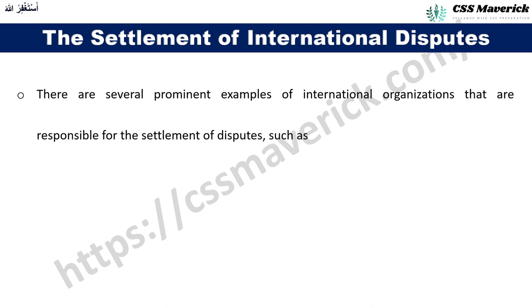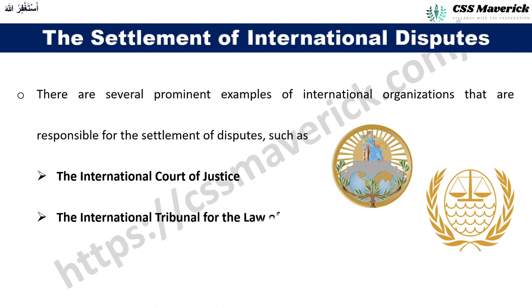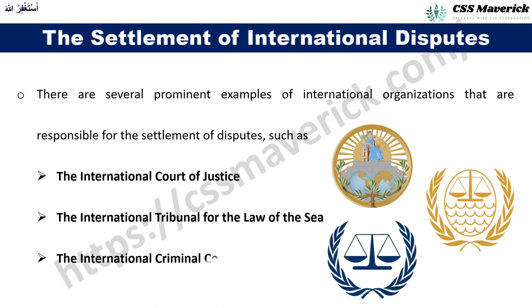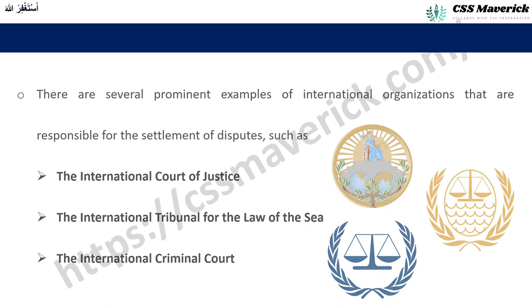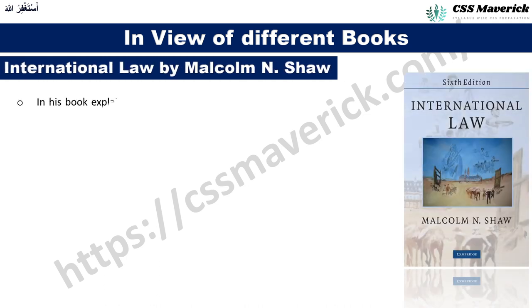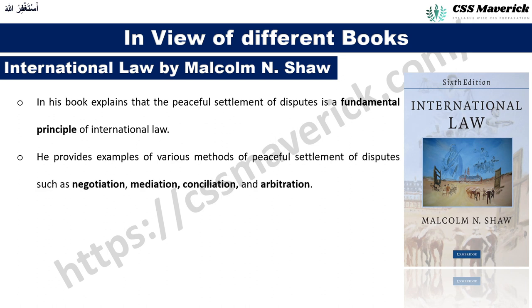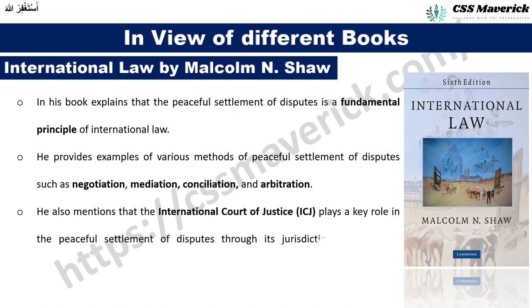There are several prominent international organizations responsible for the settlement of disputes, such as the International Court of Justice, the International Tribunal for the Law of the Sea, and the International Criminal Court. Malcolm N. Shaw in his book explains that peaceful settlement of disputes is a fundamental principle of international law, providing examples of negotiation, mediation, conciliation, and arbitration, and noting the ICJ's key role through its jurisdiction to hear and determine legal disputes between states.